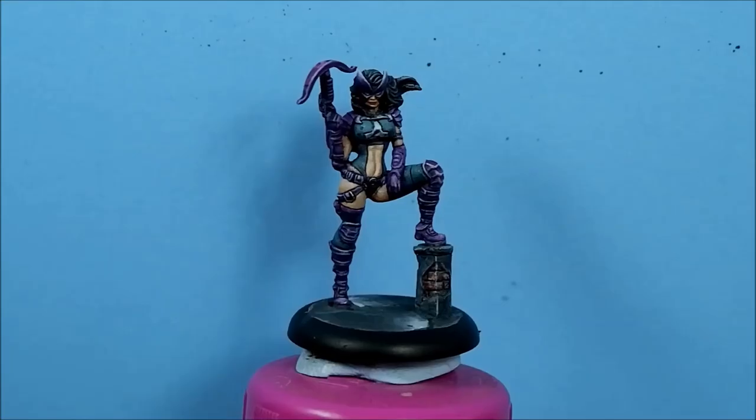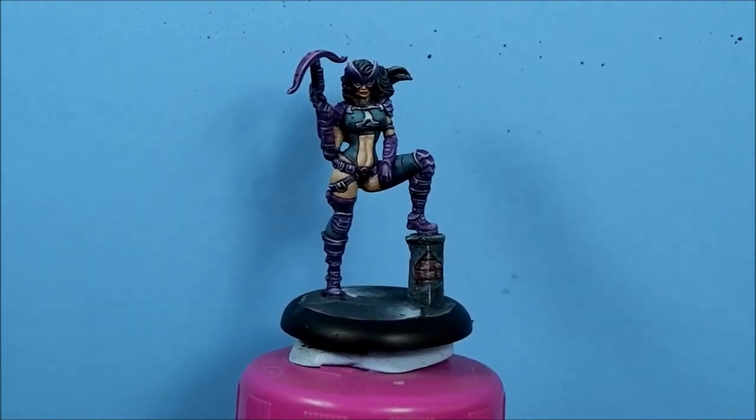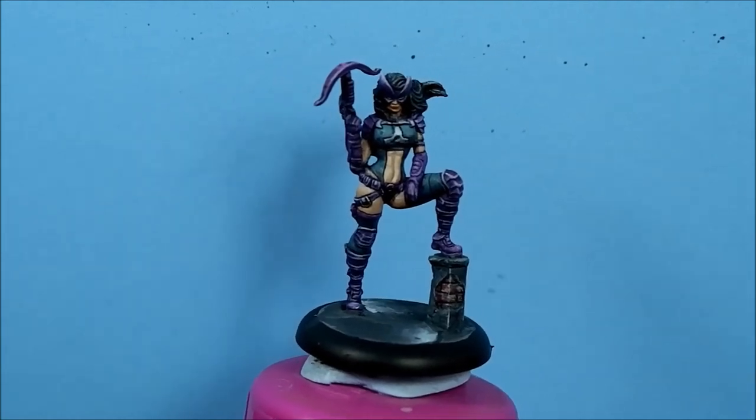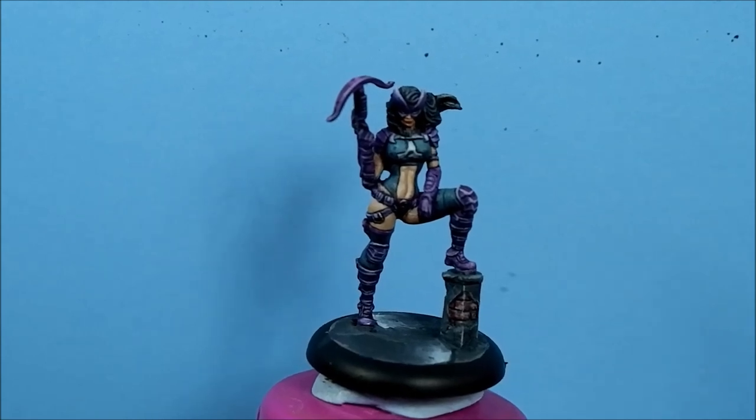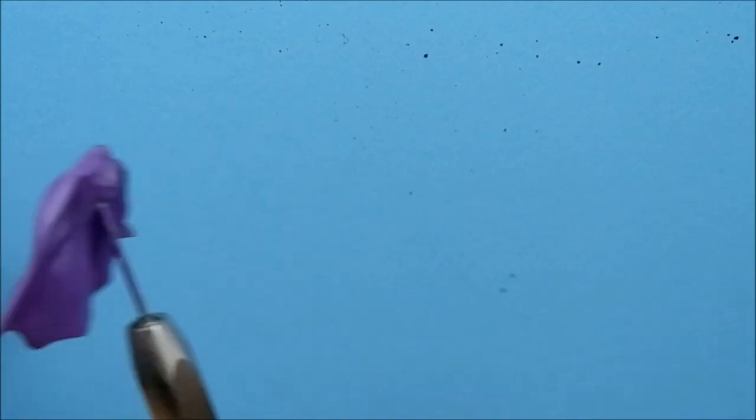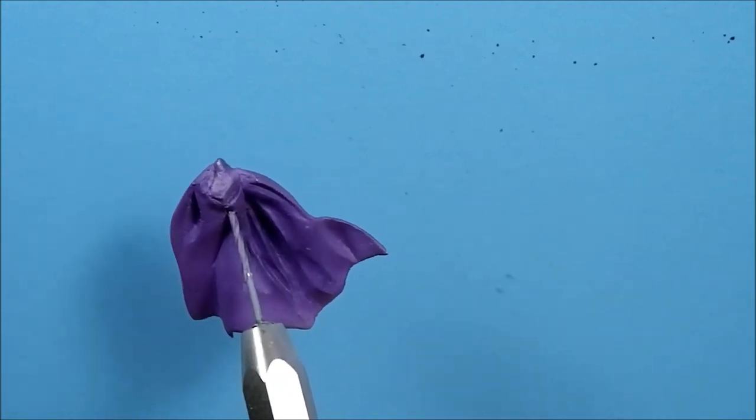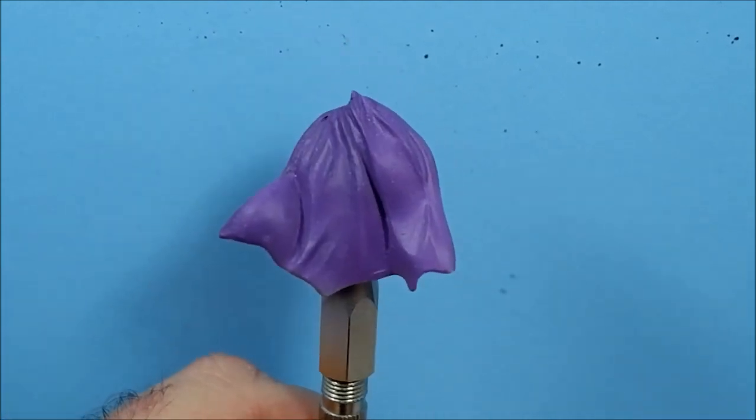Right, here we go. As you can see I've already made a start on Huntress, almost finished there. The way I usually paint capes is if I can't get to the inside of the cape, I'll paint them separately. What I've done is I always use a pin vise and I'll drill into a bit where it attaches to the body so you can't see the hole.